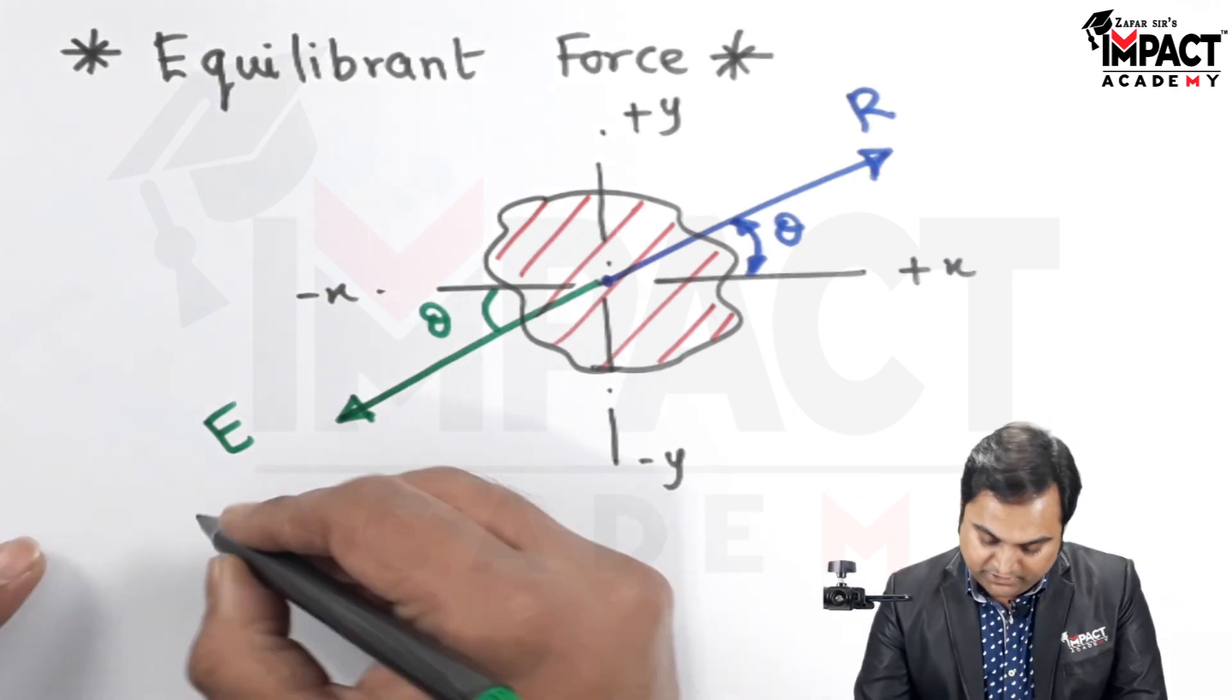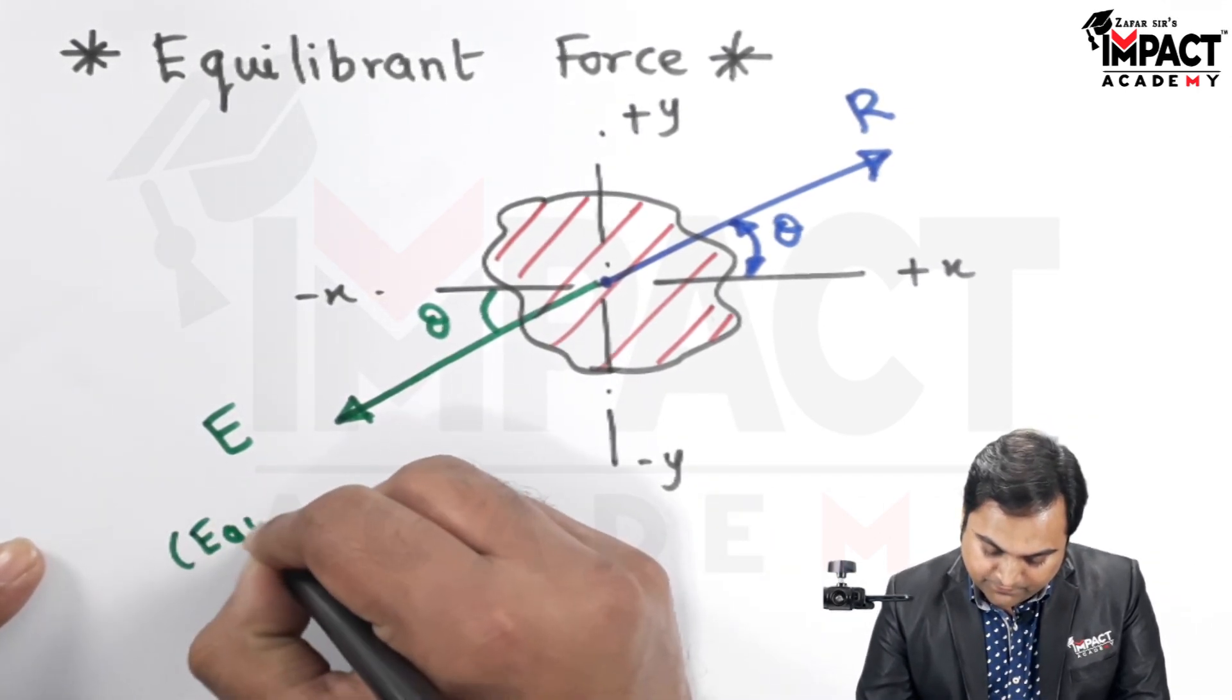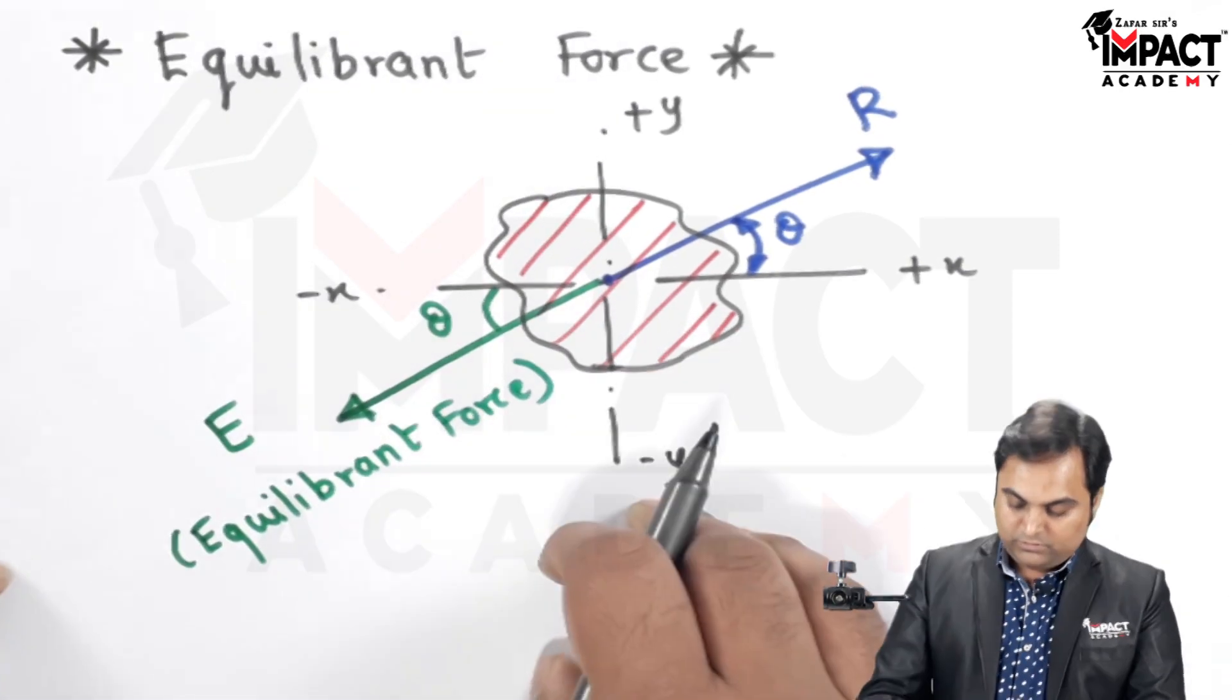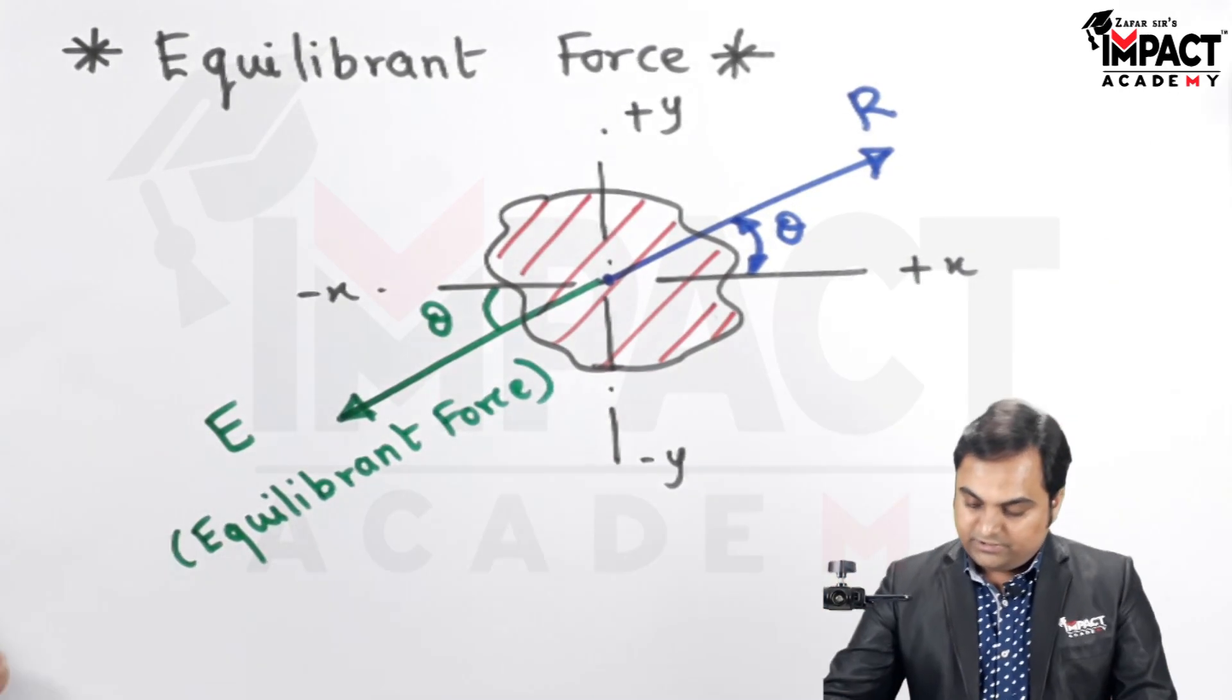So this capital E indicates the equilibrium force and R was the resultant force.